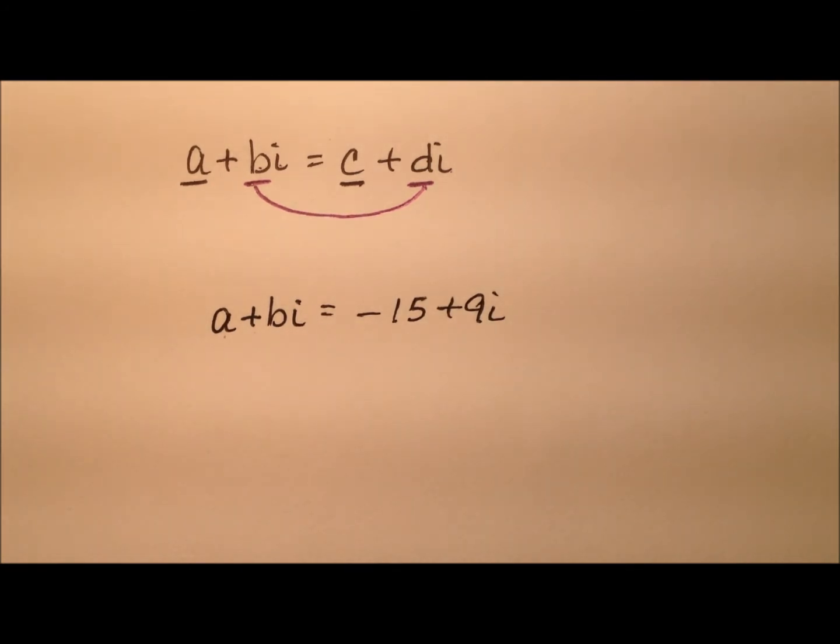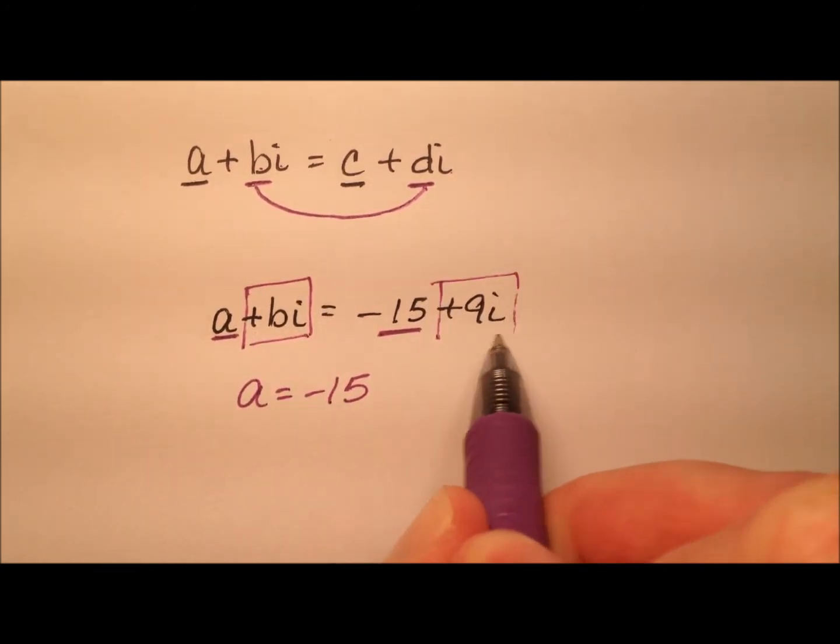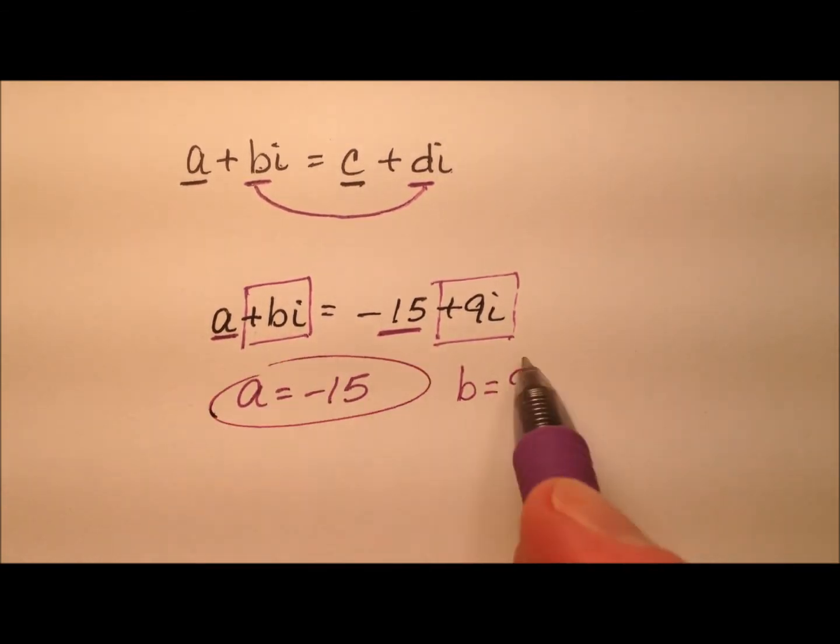So if these two complex numbers are equal to each other, what do I know must be true? Well, the real parts have to be the same. So a has to equal negative 15. And similarly, this positive bi and this positive 9i also have to be equal. So I can say b equals 9. And that's all we have to do for that first example.